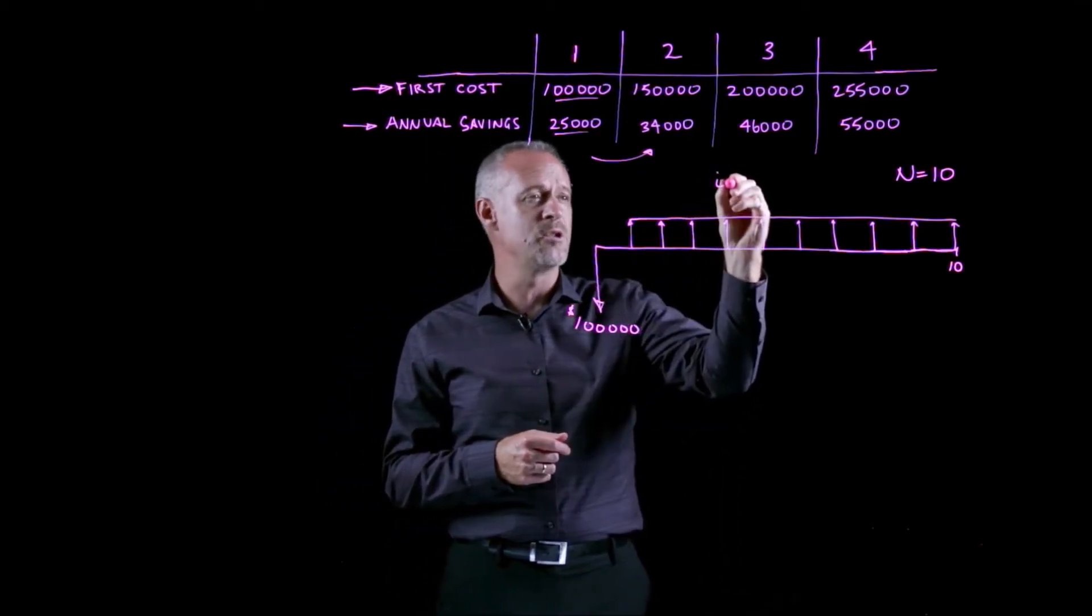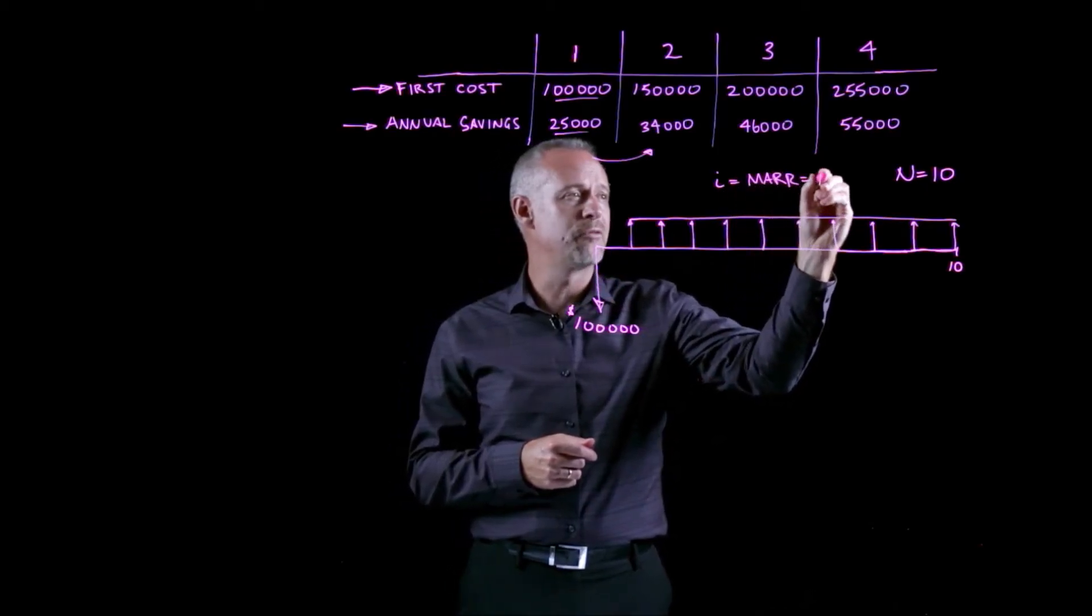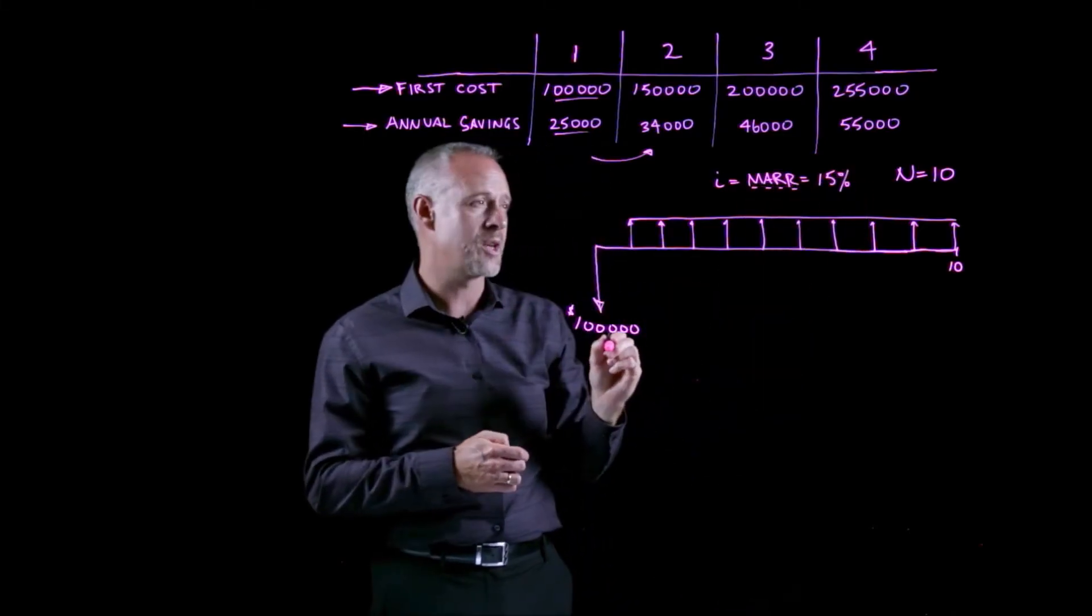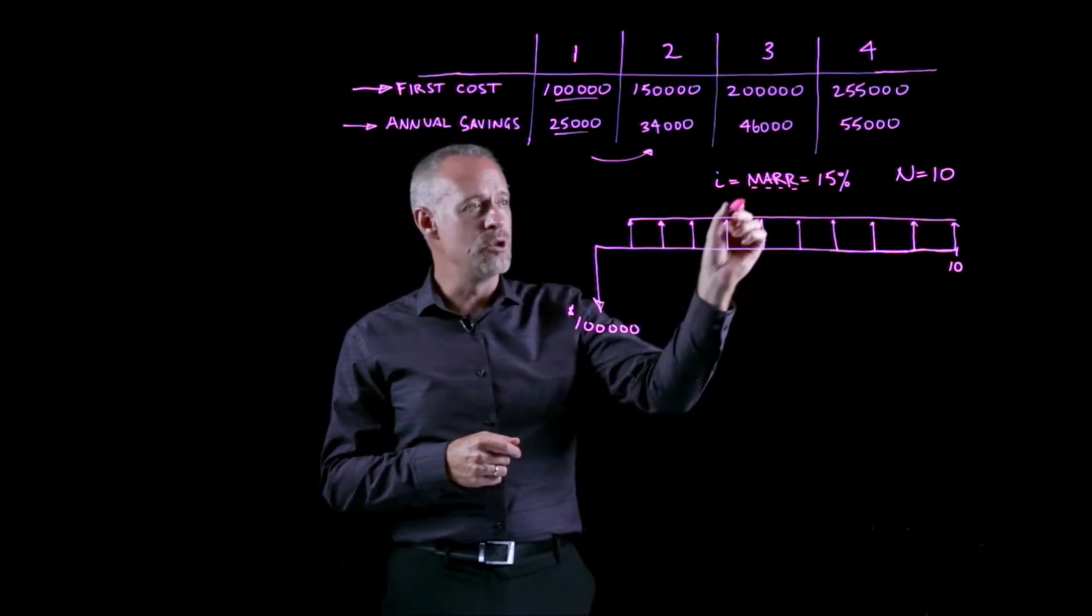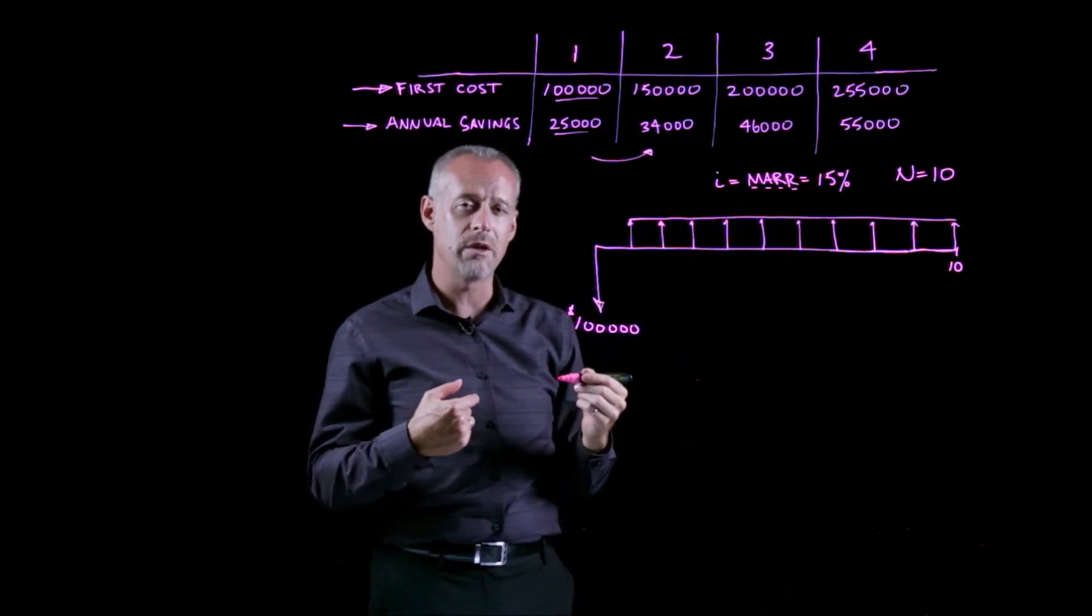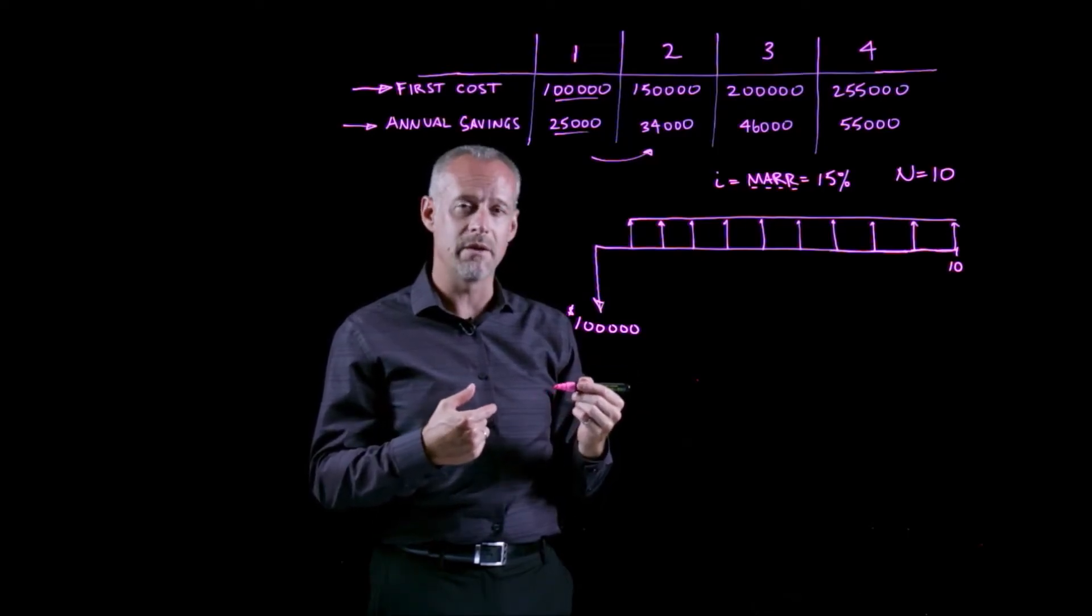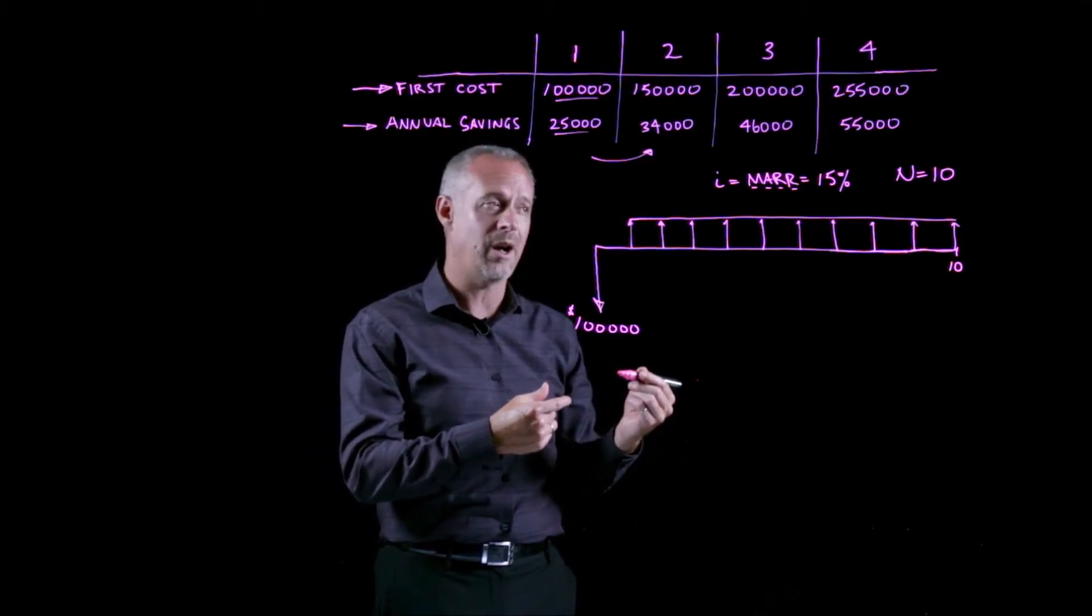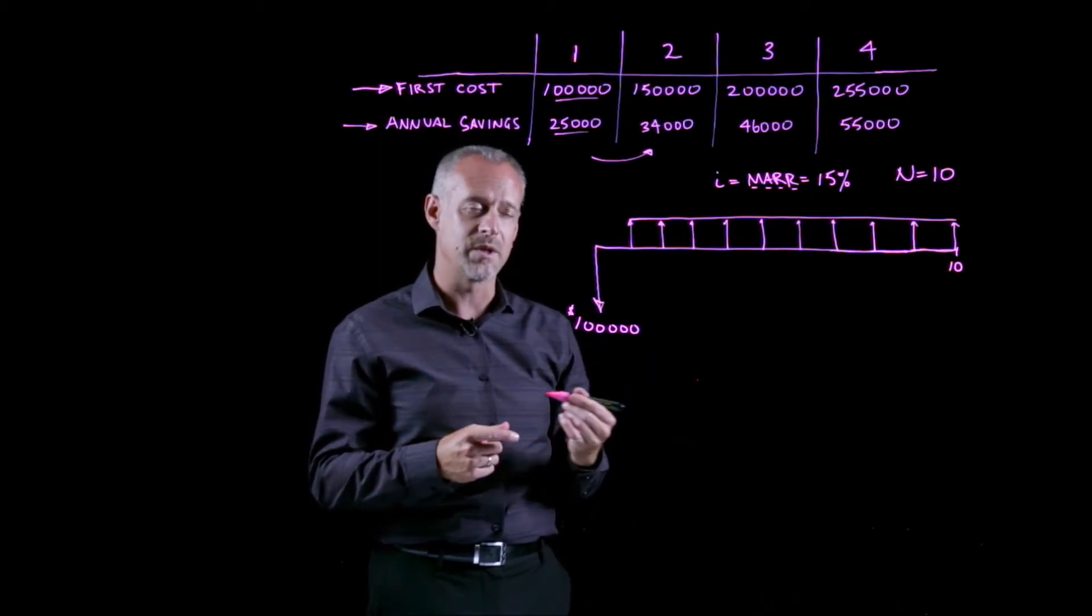So this is the minimum attractive rate of return for this company to invest in projects. If we do the time value of money calculations using the MAR as the interest rate, if we calculate a positive present value, that means that the project earns a rate of return higher than the MAR. I'll repeat that again at the end, just to emphasize that point.